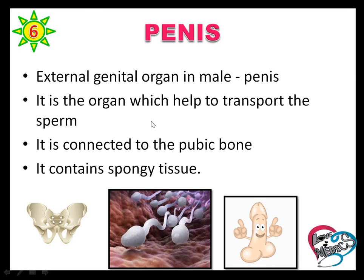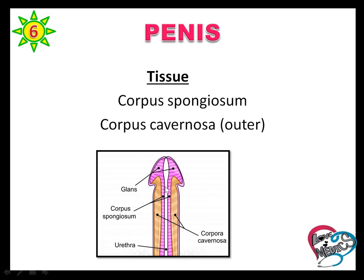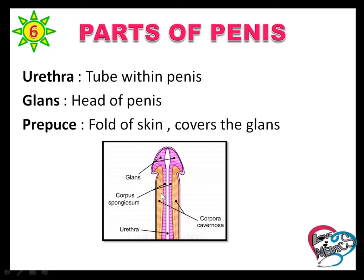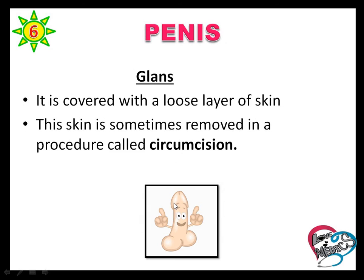The penis is the external genital organ. It helps to transport the sperm, is attached to the pubic bone, and contains spongy tissue. Whenever it is filled with blood, the size of the penis changes. The tissues of the penis are corpus spongiosum and corpus cavernosa. The tube within the penis is the urethra, and the head of the penis is called the glans.